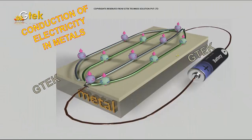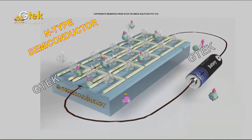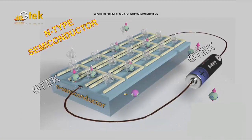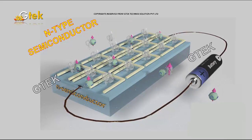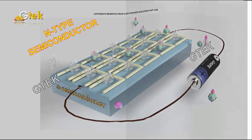The electricity is passed in the metals. I am trying to show you the mechanism of how conduction of electricity occurs in metals, followed by the n-type and p-type conductors. If it is an n-type semiconductor, how is the current passed? How is the process happening?